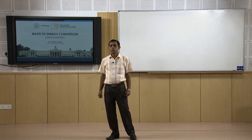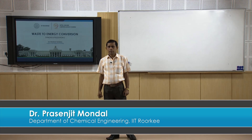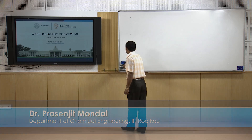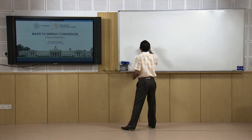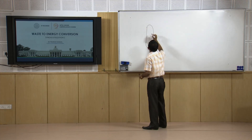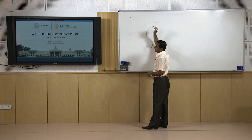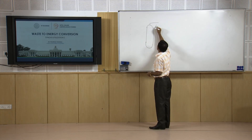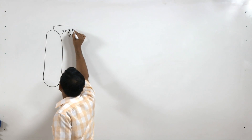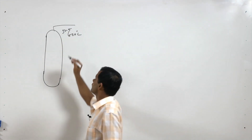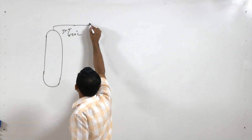Good morning everyone. In the last module we discussed gasification and we came to know that in a gasifier the syngas is produced and it exits from the gasifier at high temperature — 500 to 600 degrees centigrade. So that hot syngas is then cleaned.